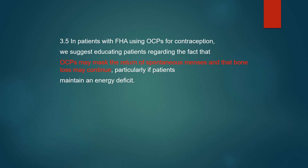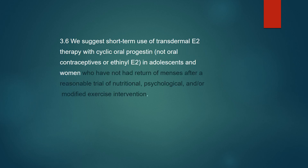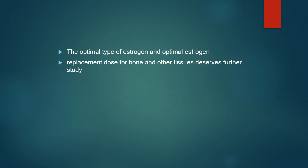In patients with FHA using OCPs for contraception, educating the patient is important regarding the fact that OCPs may mask the return of spontaneous menses and that bone may continue to be lost, particularly if the patient maintains an energy deficit. The short-term use of transdermal estradiol therapy with cyclic progesterone is recommended. The optimal type of estrogen and optimal estrogen replacement dose for bone and other tissues deserve further study.